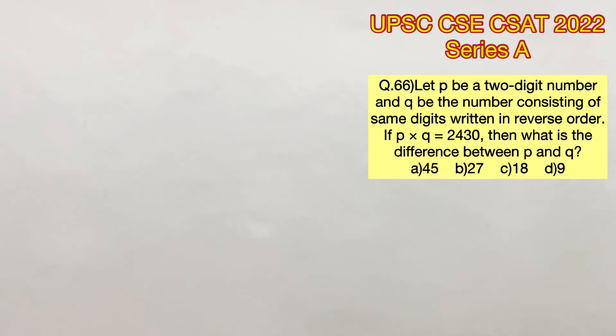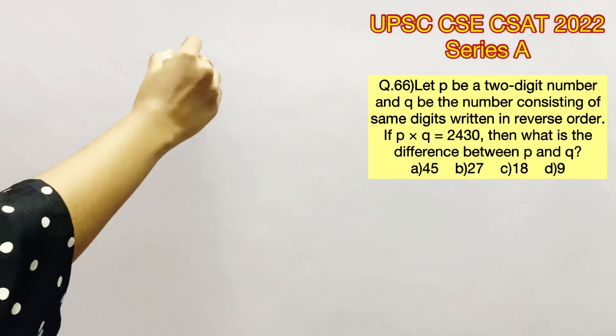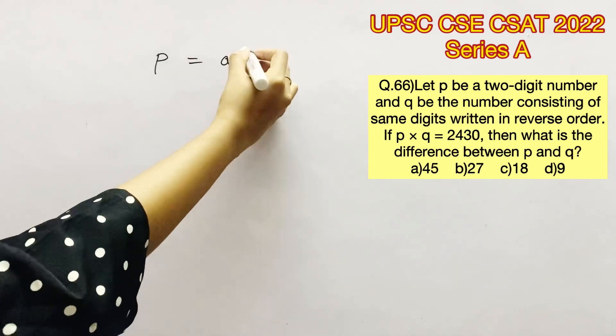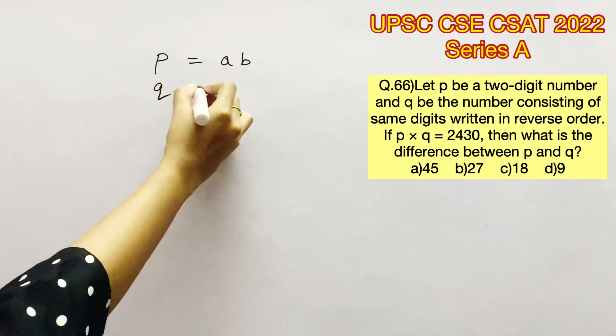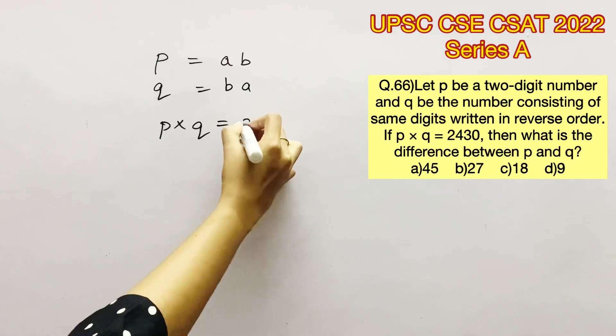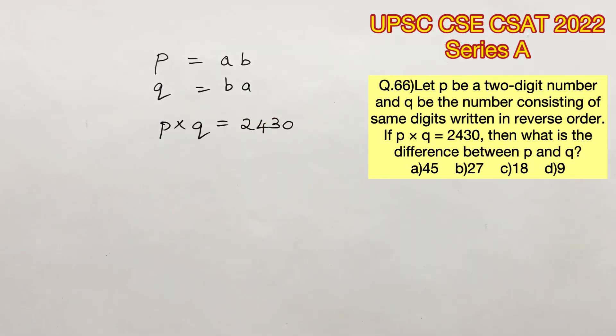Let P be a two-digit number and Q be the number consisting of the same digits written in reverse order. So let P be AB and Q be BA. If P into Q is equal to 2430, what is the difference between P and Q?